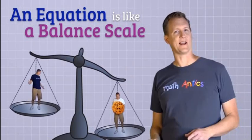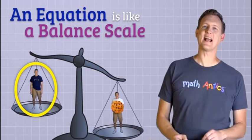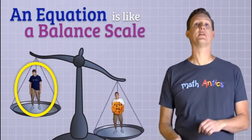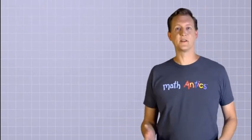An equation is like that. Whatever is on one side of the equal sign must have exactly the same value as whatever is on the other side. Otherwise, the equation would not be true. Of course, that doesn't mean that the two sides have to look the same.